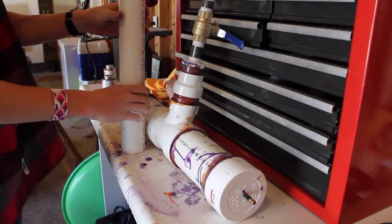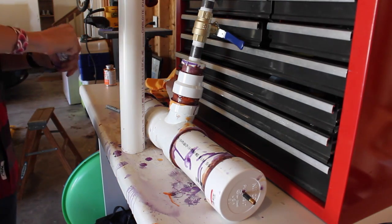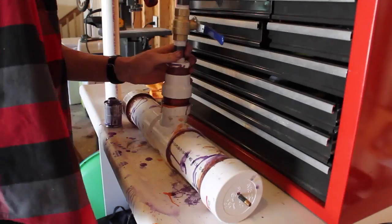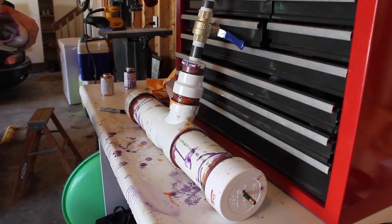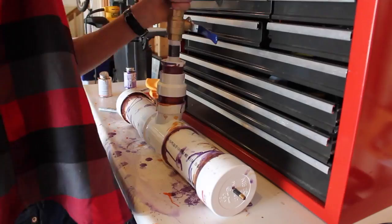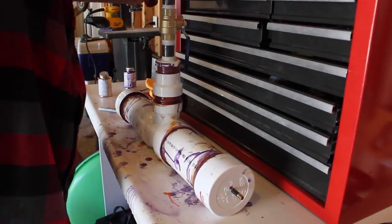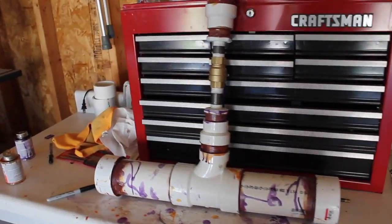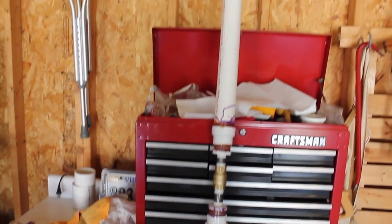Once you've completed that, take the barrel and prepare it to be cemented to the other end of the ball valve component. And that's how you build a pneumatic potato cannon.